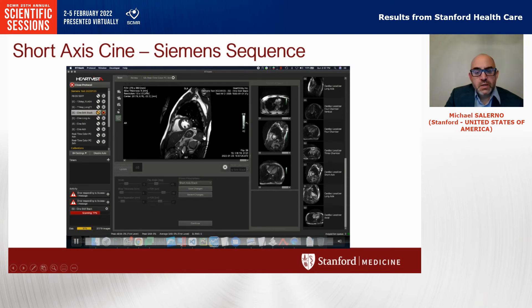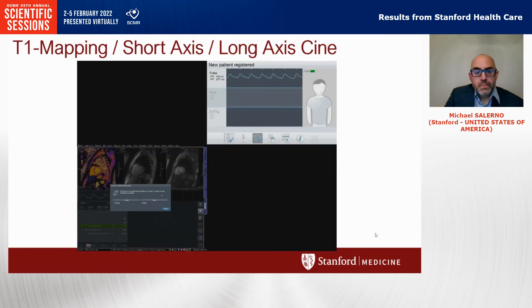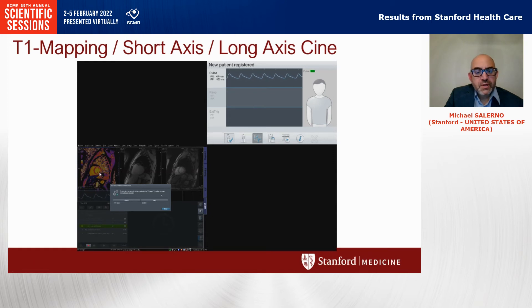We'll see the next CINE is going to appear here on the scanner in the HeartVista framework. When we look at this on the scanner, because of the Siemens sequence, it shows up as if it was run natively. This is the last image from the short axis stack.